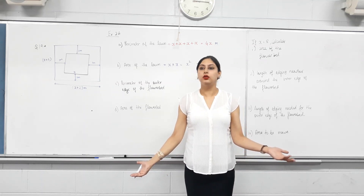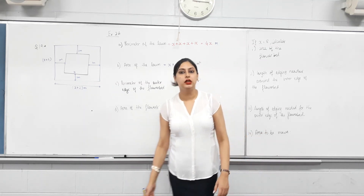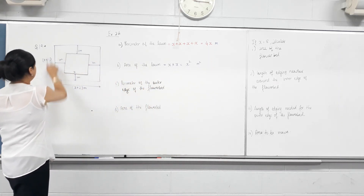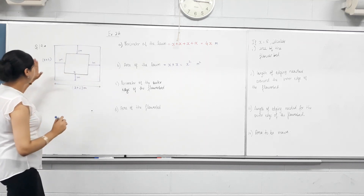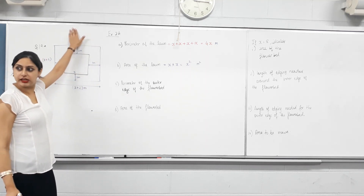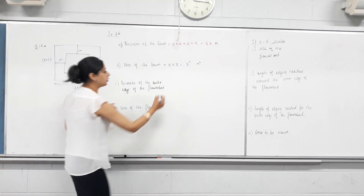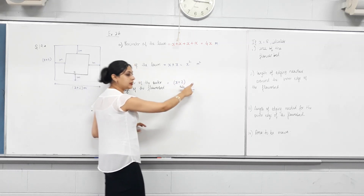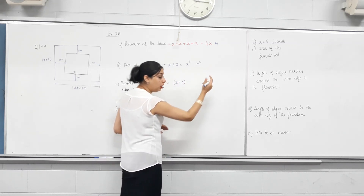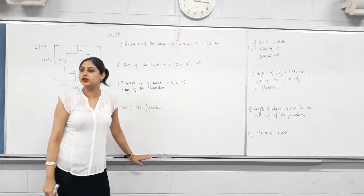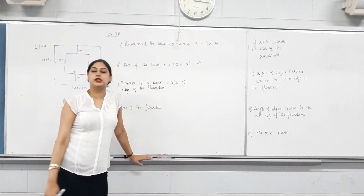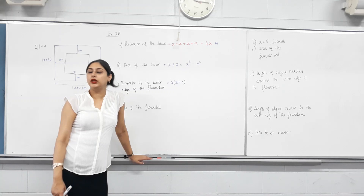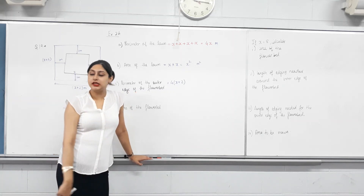Is there anything difficult about this question? No. It's worded, but it's not difficult. Next: perimeter of the outer edge of the flower bed. So this is the outer edge. Isn't the perimeter this, plus this, plus this, plus this? So what is this length equal to? X plus 2. So we are adding X plus 2 four times. I can either write X plus 2 plus X plus 2 plus X plus 2 plus X plus 2, or what's the smart way — can't I just write 4 times X plus 2? Either way, you'll get the same answer. Do you need to expand it? No. Factorized form is the simplest form anyway.